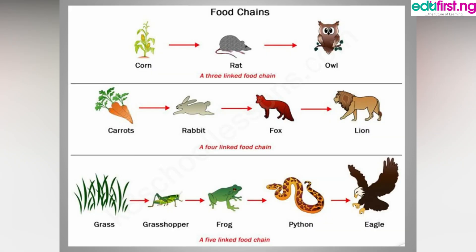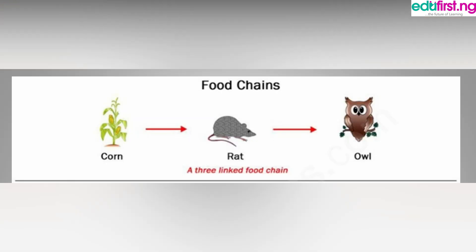The next image shows food chains. In the first one, you can see a plant — a corn specifically. This corn transfers energy to the rats, and the rat transfers energy to the owl. That's how energy is transformed and transferred in an ecosystem. The rat eats the corn, and the owl eats the rat — energy is transferred; none is wasted.